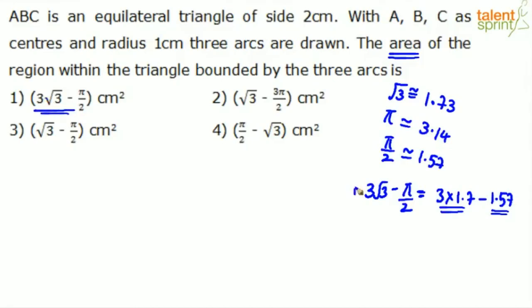Look at option 2: √3 - 3π/2. √3 is 1.73 minus 3π/2. π/2 itself is 1.5, so 3 into π/2 will be 4.5. Therefore, 1.7 minus 4.5 will give you a negative answer. Can the area be negative? No. Option 2 eliminated.